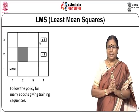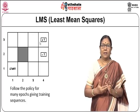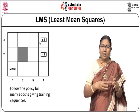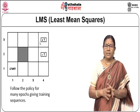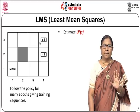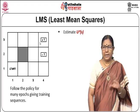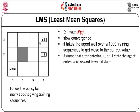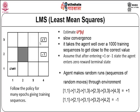In least mean squares, you follow the policy for many epochs. An epoch is the path followed until a terminal state is reached, giving training sequences. You are estimating the utility of being in a state, but this has slow convergence — it takes an agent well over a thousand training sequences to get close to the correct value. After entering the +1 or -1 state, the agent is assumed to enter a terminal state with reward 0. The agent makes random sequences of moves: for example, starting at (1,1), going to (1,2), (1,3), (2,3), (3,3), (4,3) reaching +1.